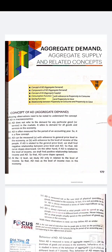Aggregate demand is measured with reference to the general price level in the economy and with reference to the level of income. When aggregate demand is studied in relation to the general price level, there is a negative relationship — with increase in price, demand decreases, and with decrease in price, demand increases. But in relation to income, there is a positive relationship: demand increases with increase in income and decreases with decrease in income.